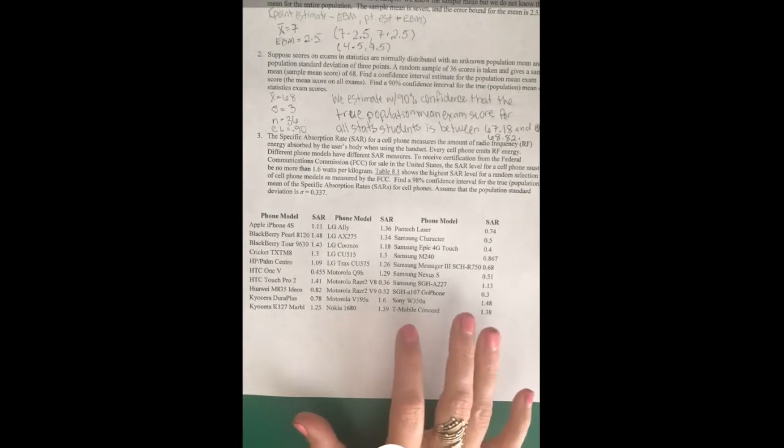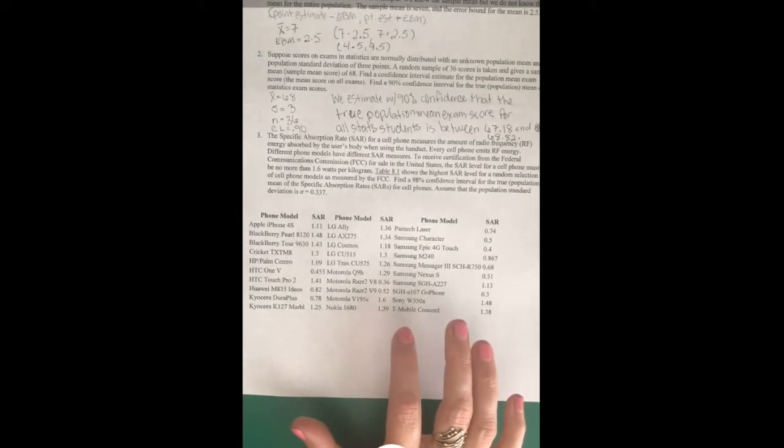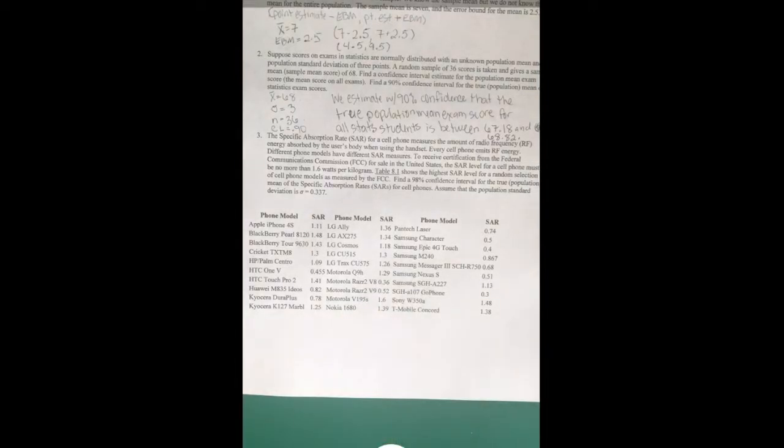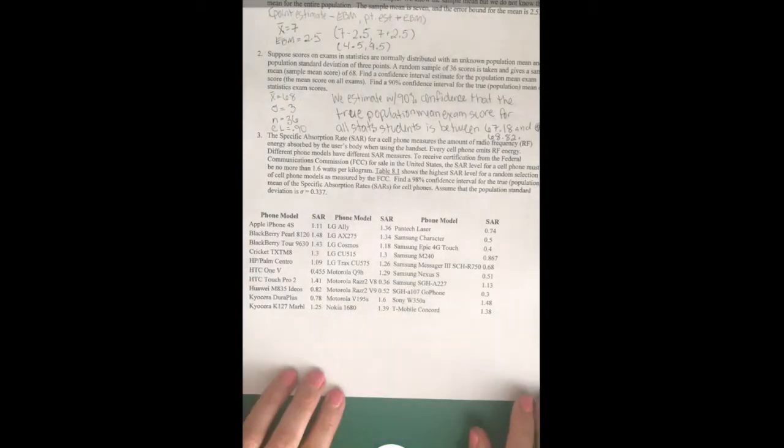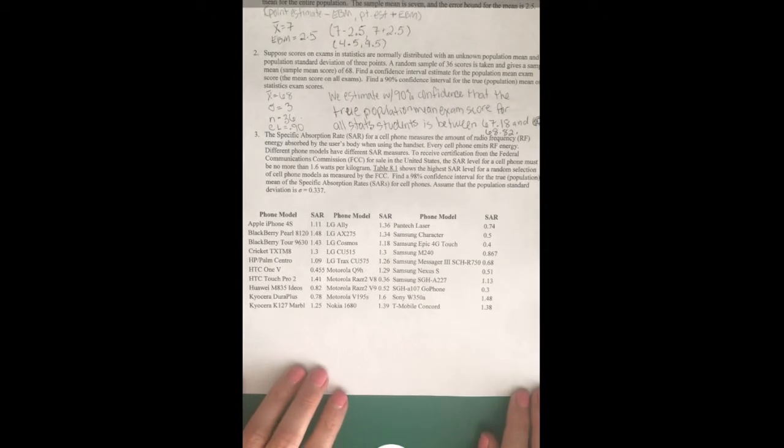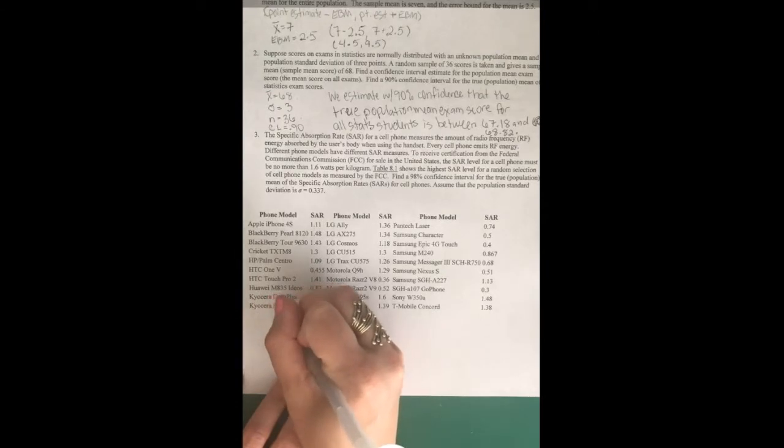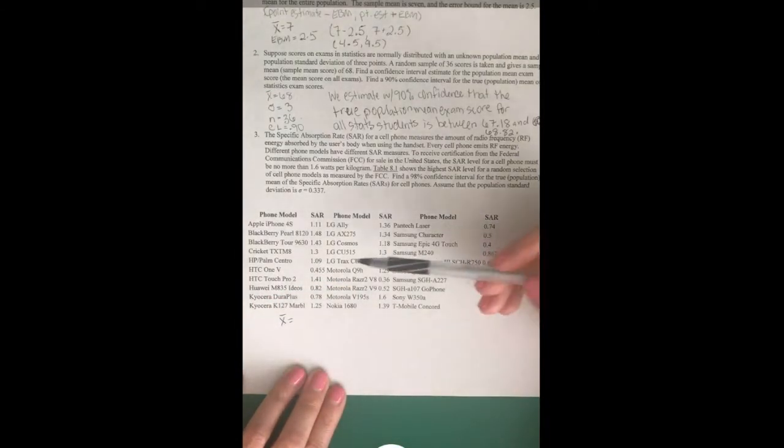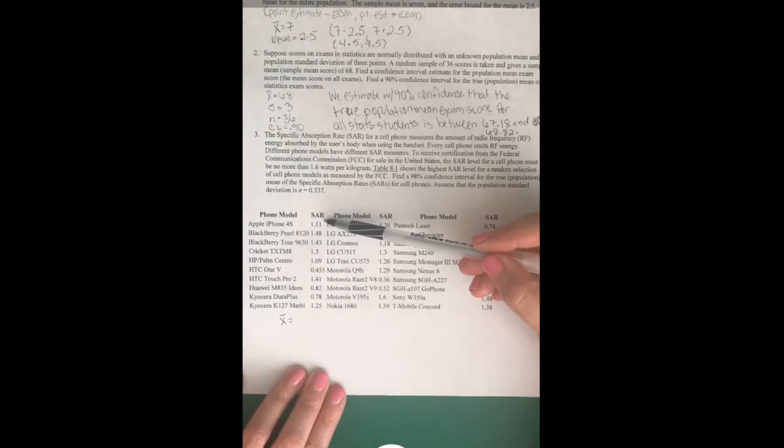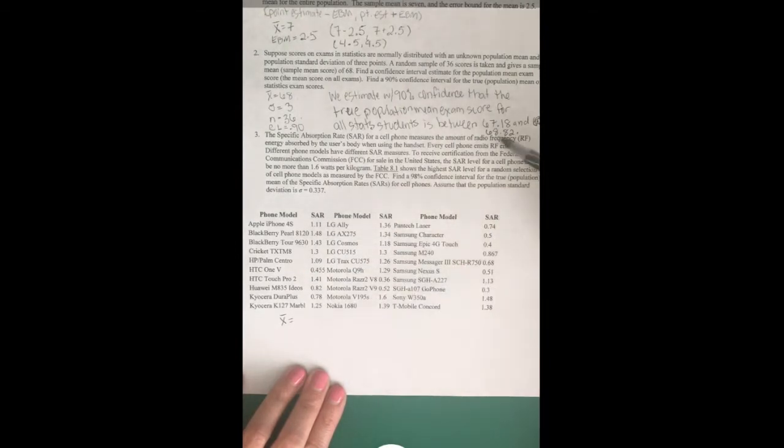We have to assume that the standard deviation is 0.337. Let's write down what information we know. The first thing we need is the sample mean. To calculate that, you add up all the values and then divide by the total number.